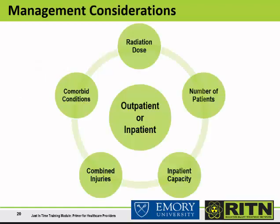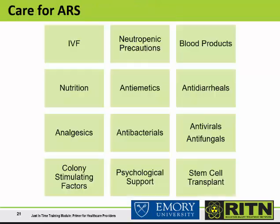The management of ARS consists primarily of good supportive care. In some cases, management can be initiated and maintained in an outpatient setting, depending on the severity of exposure, signs and symptoms, patient comorbid conditions and associated injuries, and healthcare system capacity. For example, a patient can be triaged for outpatient care if the estimated radiation dose is less than 2 Gy, or if the absolute neutrophil count is greater than 1,000 cells per microliter without fever or signs of infection. Supportive care for ARS includes IV fluid resuscitation, neutropenic precautions, blood products when needed, nutrition, antiemetics, antivirals, analgesics, antimicrobials, and psychological support.